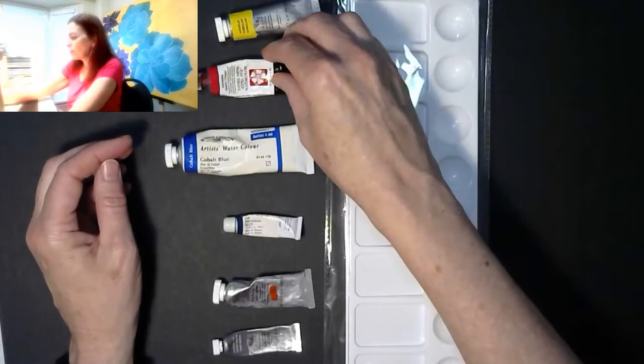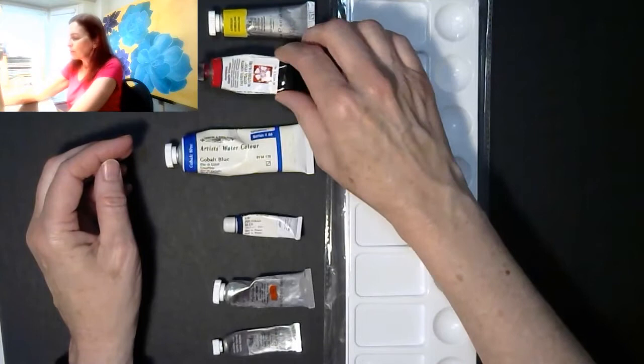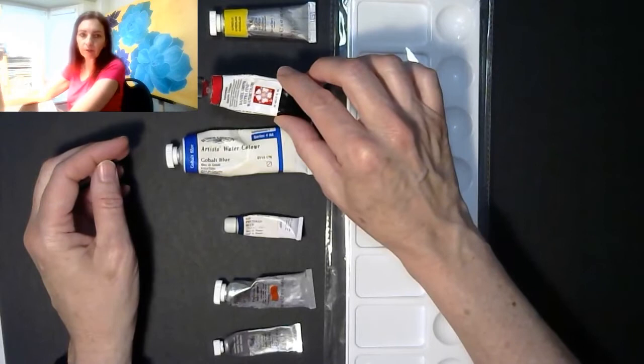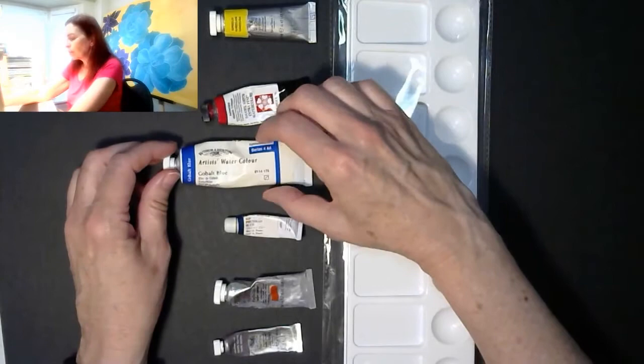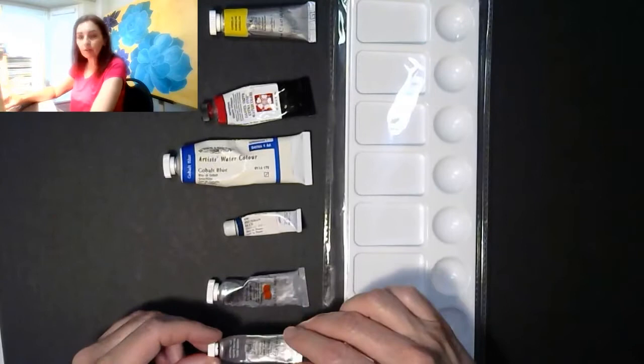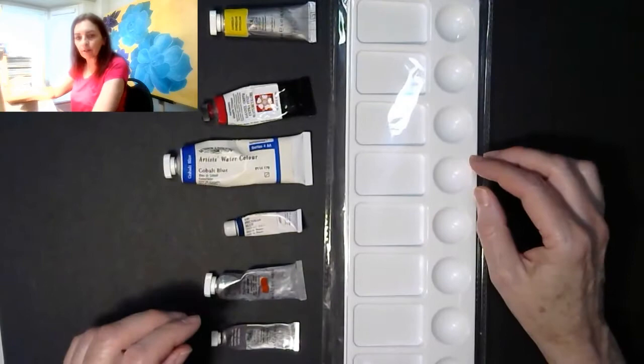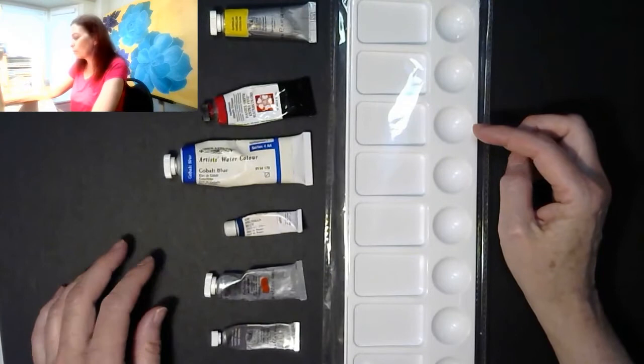My colors are aureolin yellow, permanent alizarin crimson—and permanent is important because it will fade otherwise—cobalt blue, Prussian blue, a burnt sienna, and neutral tint, which is like a black. You don't have to have these exact colors, but similar colors. At least the top three are our primary colors, and they're important to have.